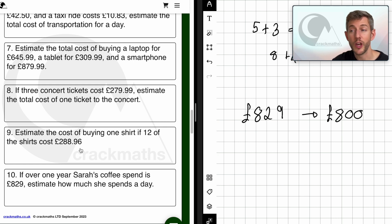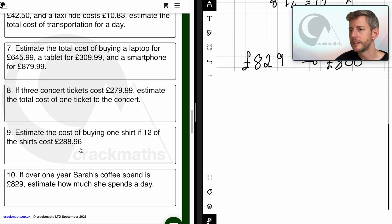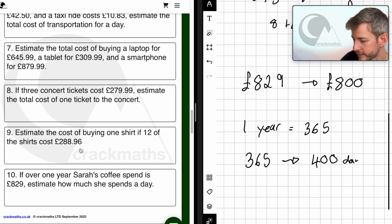So £829 is going to become £800. Now estimate how much she spends a day. So she spent £800 a year and we want to know how much she spent a day. So first of all, we need to know how many days there are in a year. So one year equals 365 days. So now we need to think of a rough estimate for 365. Remember, it's a rough estimate to make our lives simple. So 365, I'm going to say that's £400. So now what we've got is we know that over 400 days, Sarah spends £800. So in order to work this out, we're going to have to do £800 divided by £400.